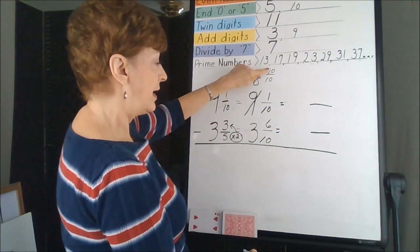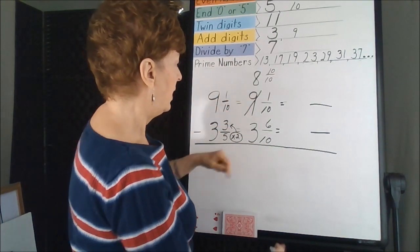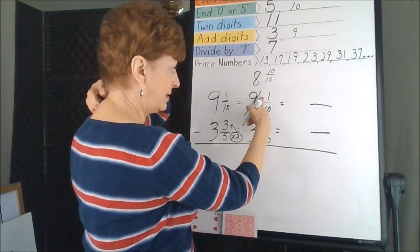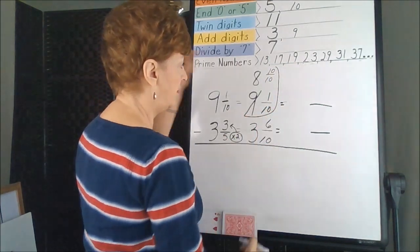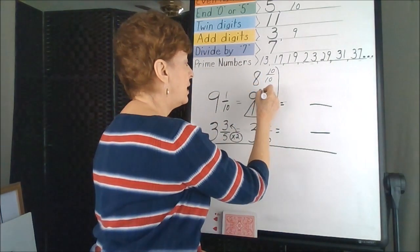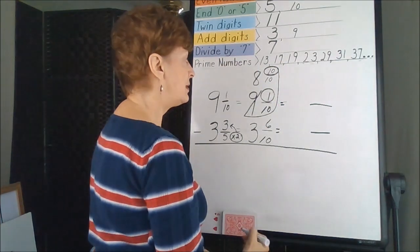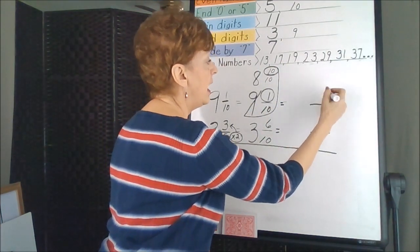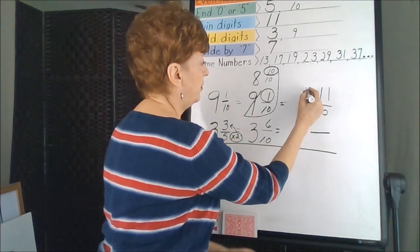8 and 10 tenths is the same as saying 9, so you've renamed this whole number. But you had some tenths to begin with. So this part of your problem has to be combined. You had 1 tenth, and you renamed 10 of them. So that comes over here as 11 tenths. Pull your whole number over.